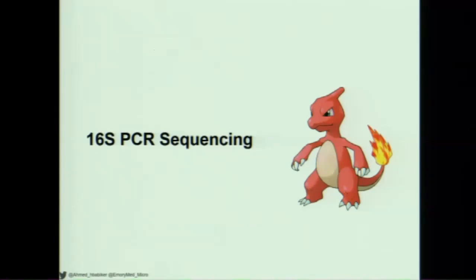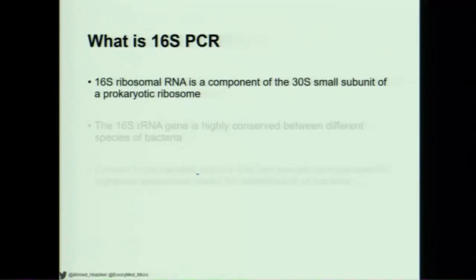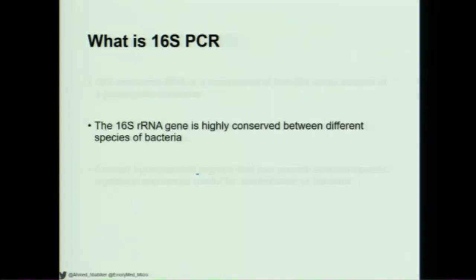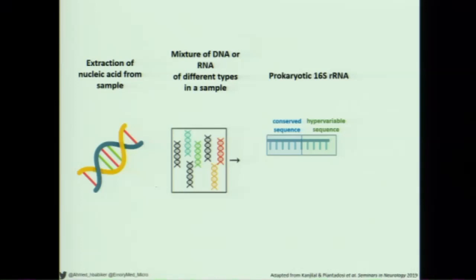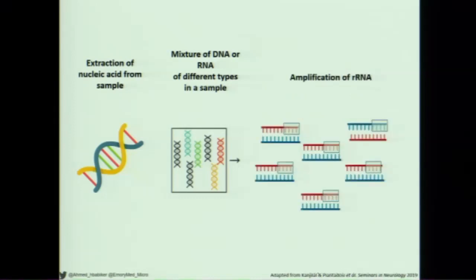Moving on to 16S PCR sequencing. The 16S stands for 16S ribosomal RNA, a component of the 30S small subunit of prokaryotic ribosomes. We do 16S sequencing because the 16S RNA is highly conserved between different species of bacteria, but within the 16S we have hypervariable regions that provide species-specific signature sequences useful for identification. Because we have a conserved sequence, we can create primers that match it and amplify our RNA, then use the hypervariable sequence to identify the species.